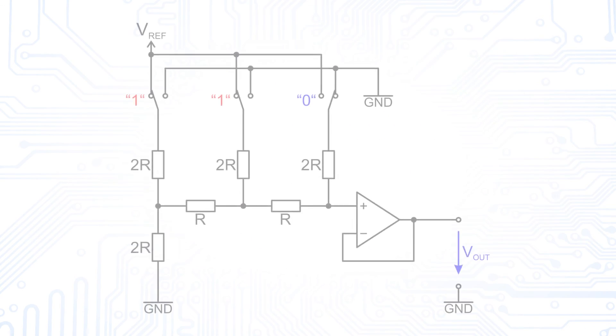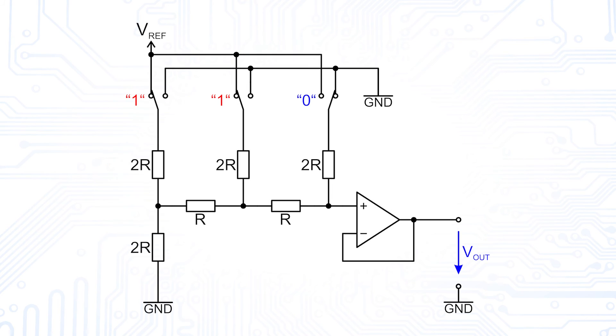For example, consider the transition from 3 to 4 or in binary 011 to 100. All switches are changed for increasing the output of a single step. Another reason for the higher glitch energy is the break-before-make behavior in the R2R switches to avoid short-circuiting the reference to ground for a short time. Switching the switches not exactly at the same time can result in a higher glitch energy.